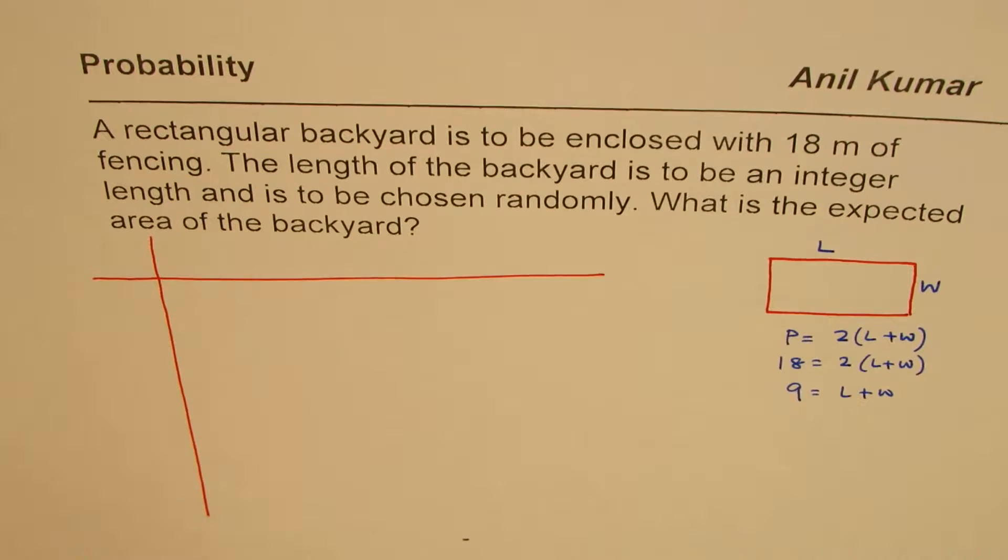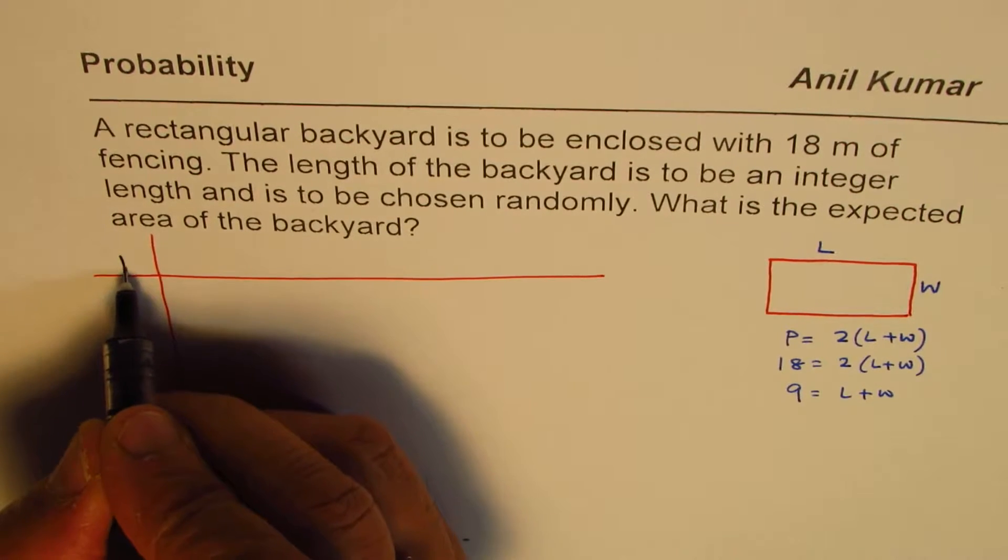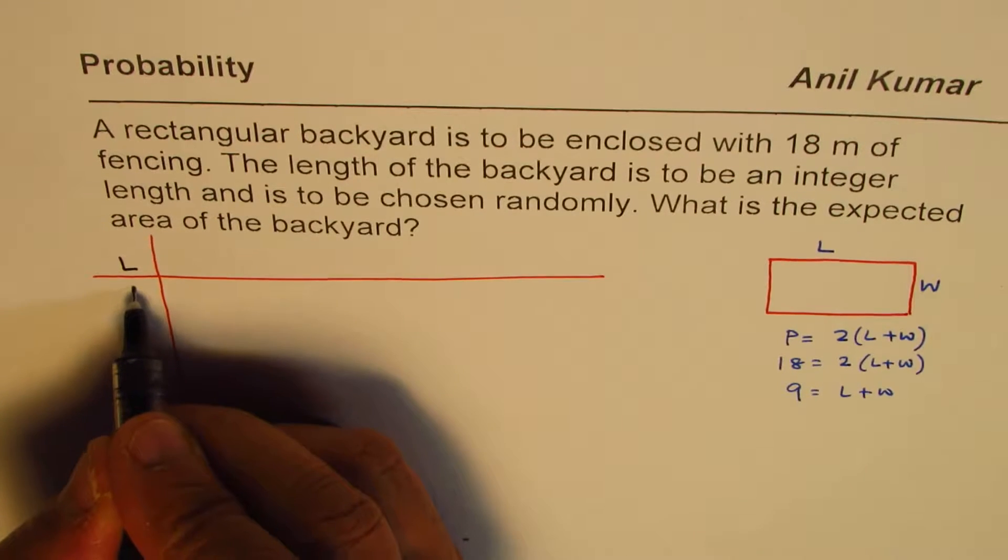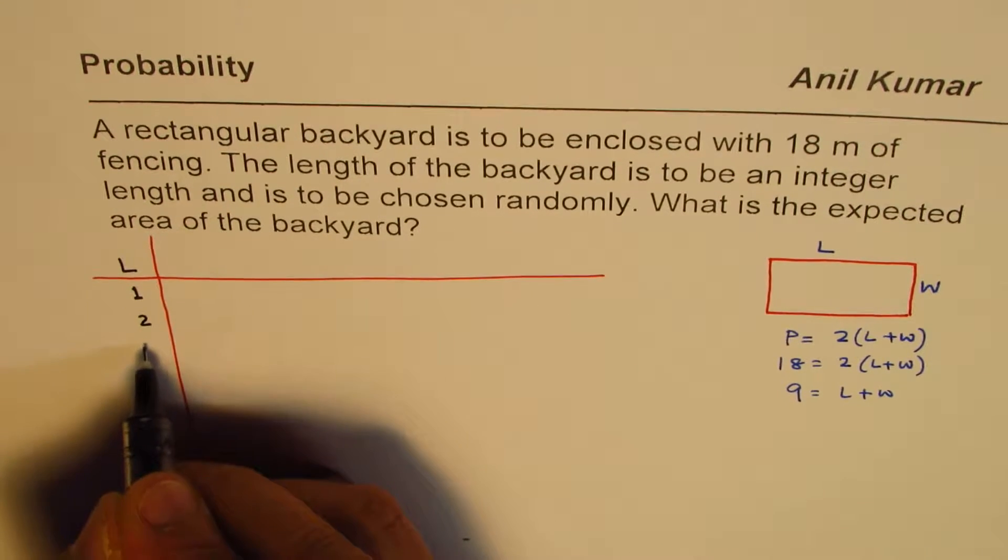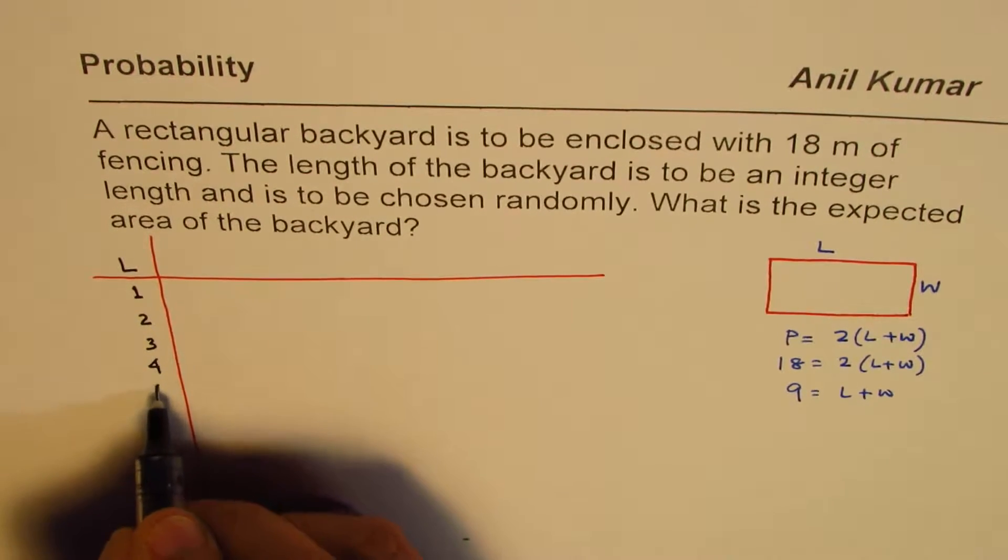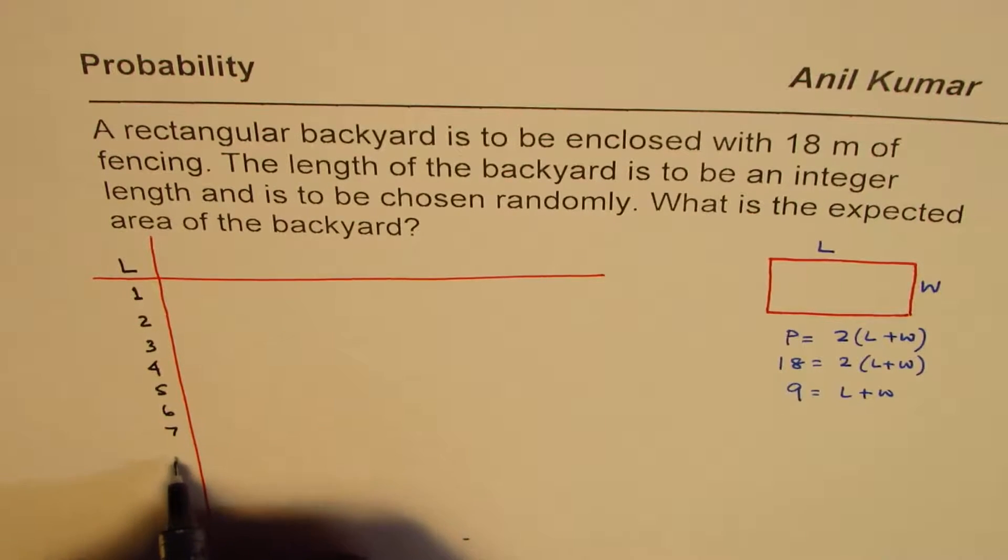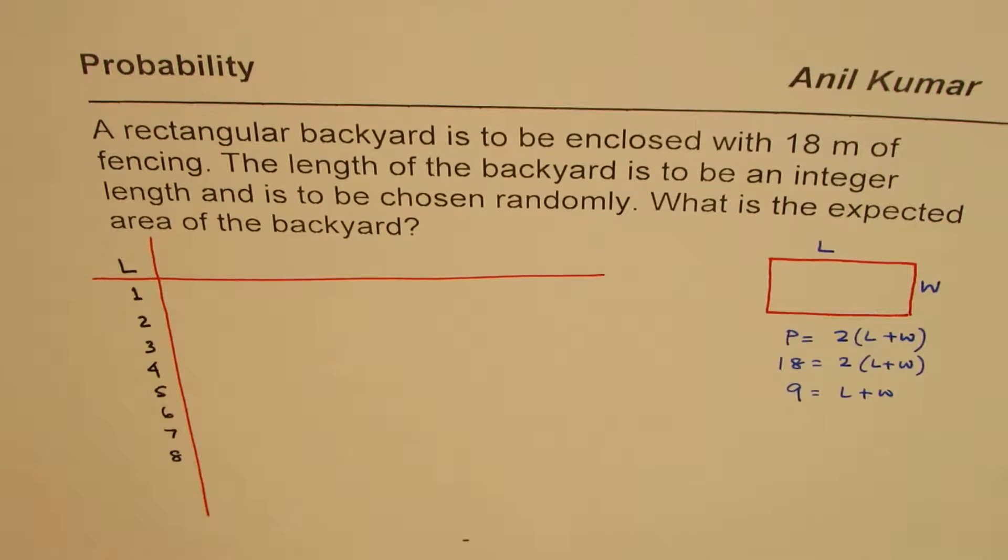So in this table, we'll make a column for length. Possible values for length are 1, 2, 3, 4, 5, 6, 7, 8. So those are the values for length.